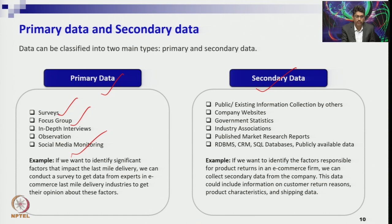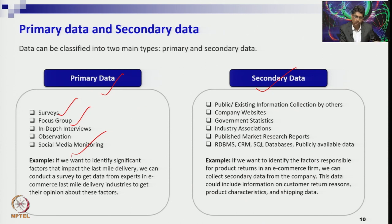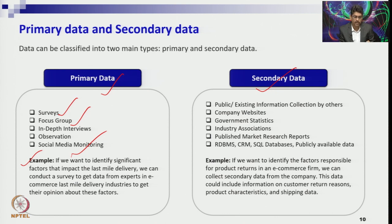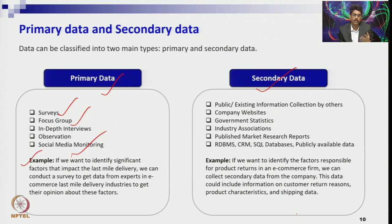Social media monitoring is also a way to collect primary data. There are marketing agencies through which you can collect data — top manager opinions and direct consumer opinions. For example, if you want to identify significant factors impacting last mile delivery in supply chain or e-commerce, you create questionnaires via literature survey, identify factors, validate through expert opinions, and create a Google Form or conduct direct interviews. That survey process falls under primary data collection.